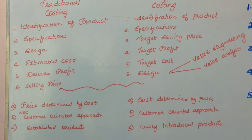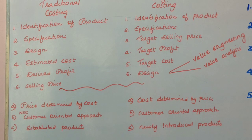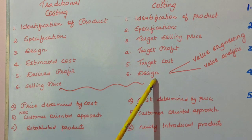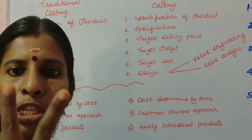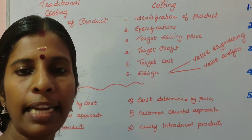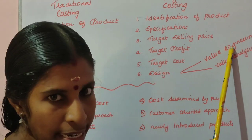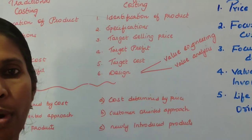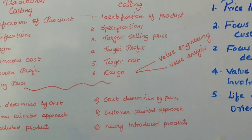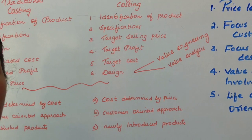Not every company can manufacture within the target cost — that is, the cost derived based on customer perception. So in the design stage, in order to produce goods at the target cost, the company uses two techniques. The first technique is known as value engineering, and the second technique is known as value analysis.